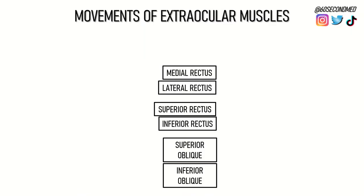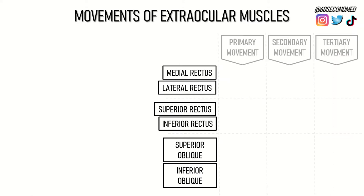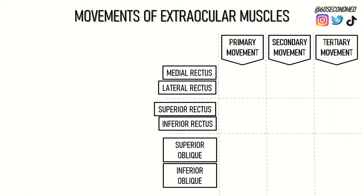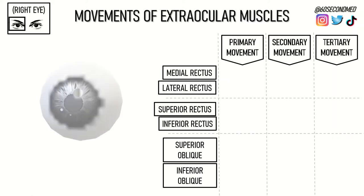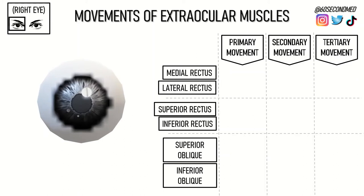Six extraocular muscles control movement of the eye. They each have a primary, secondary, and tertiary movement. For the diagram in this video, we have to imagine we're looking at the patient's right eye.